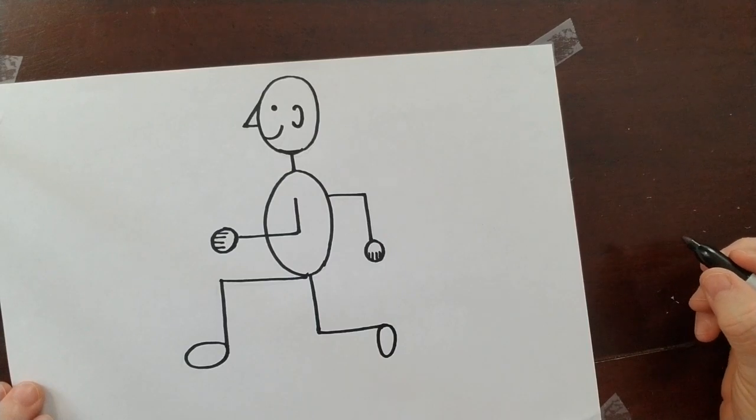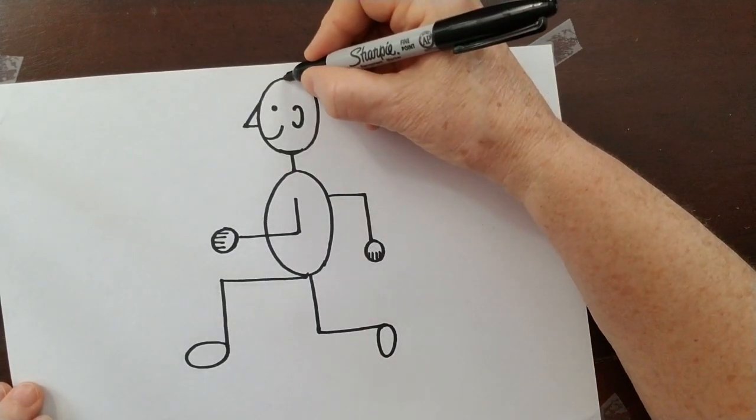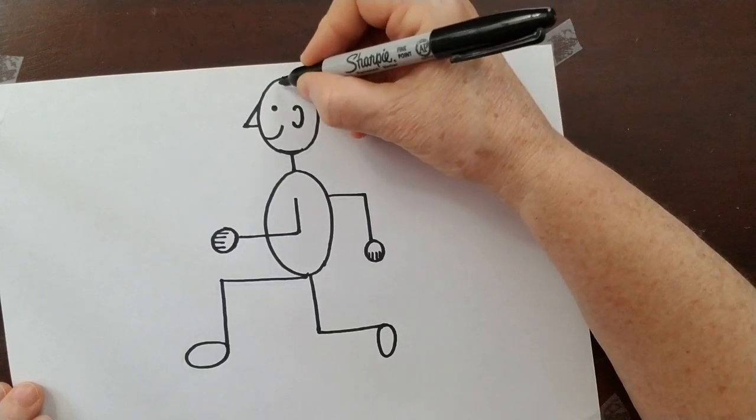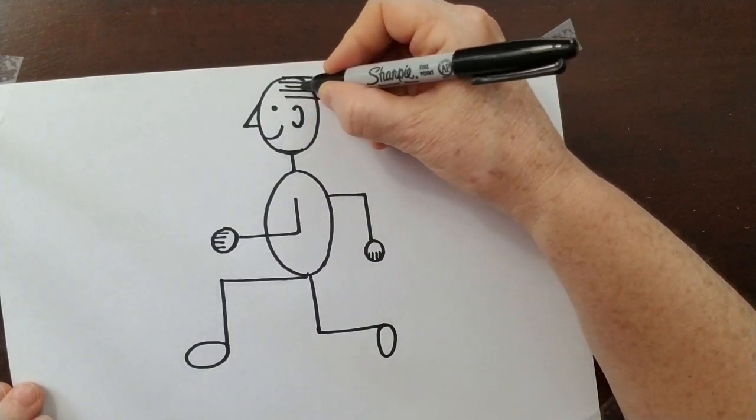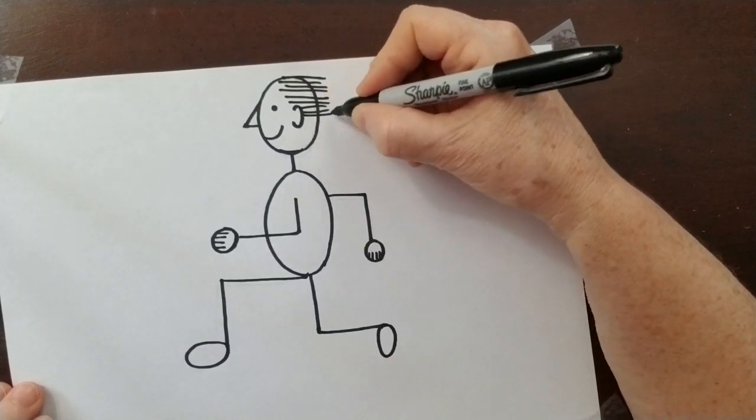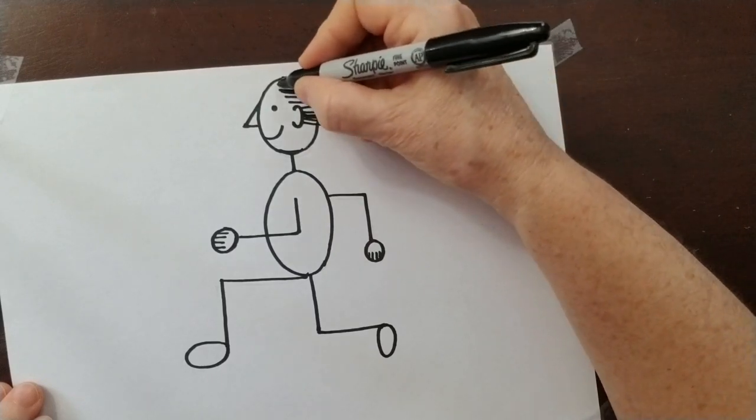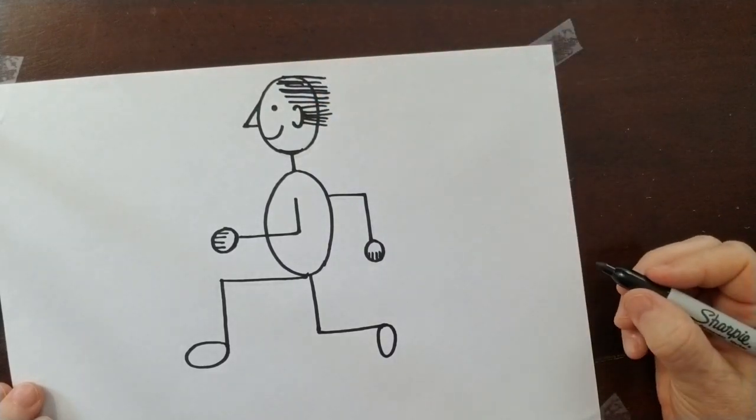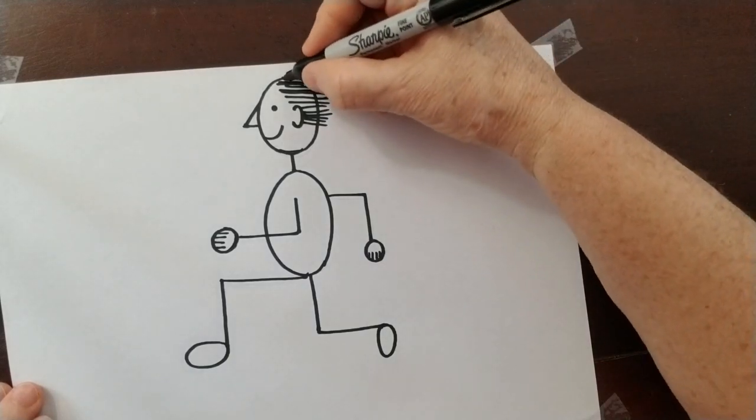Now if you're running fast, your hair is going to blow in the wind. And your hair might be something like this. Lots of horizontal lines. Because the wind is going to blow your hair back. But if your hair is longer, it might be like this.